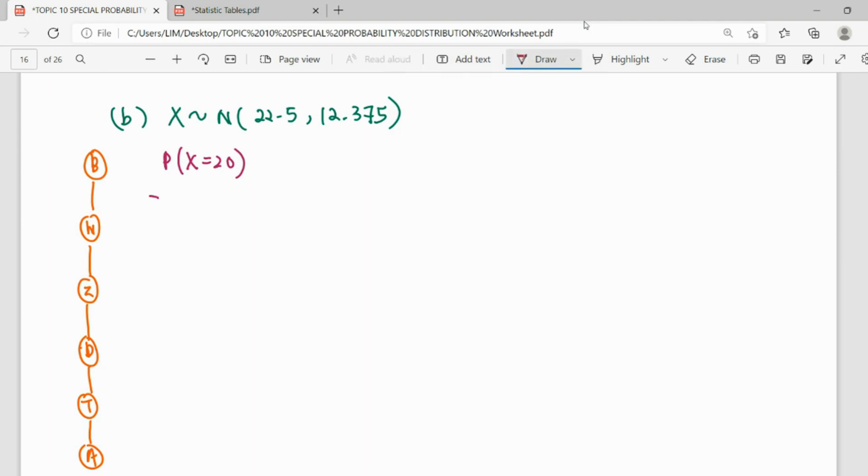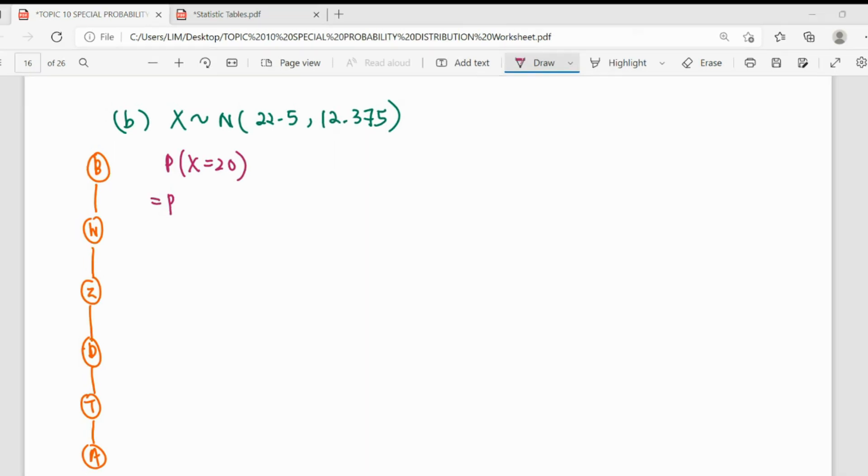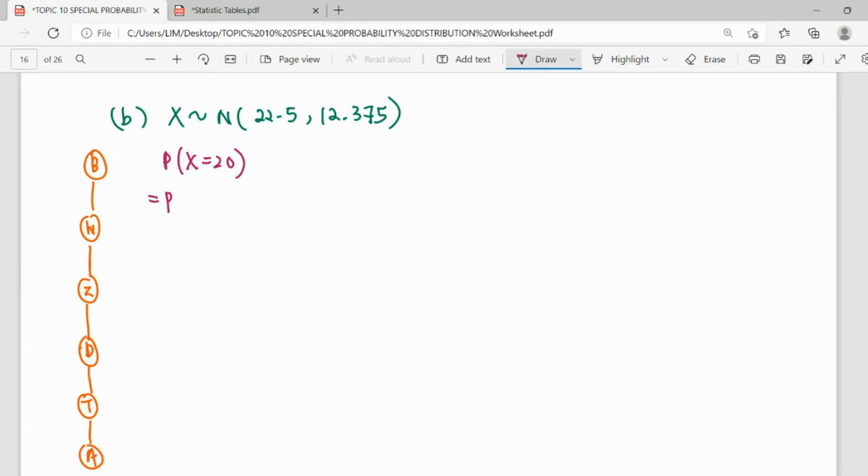Therefore, for X equals 20, we do CC. From discrete, we change to continuous. We do the boundary. So if X equals 20, its boundary will be 19.5 to 20.5. Then after we get normal, we can change to Z, which is X minus mean over standard deviation. So the X becomes Z.